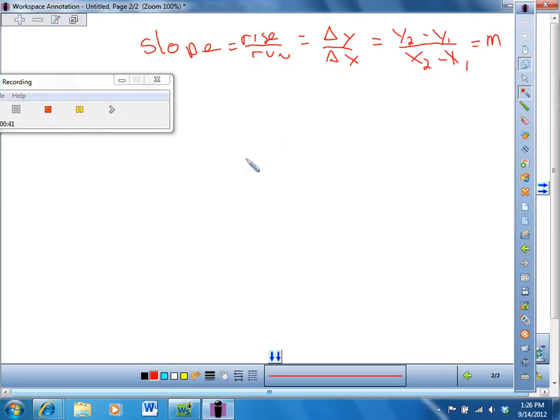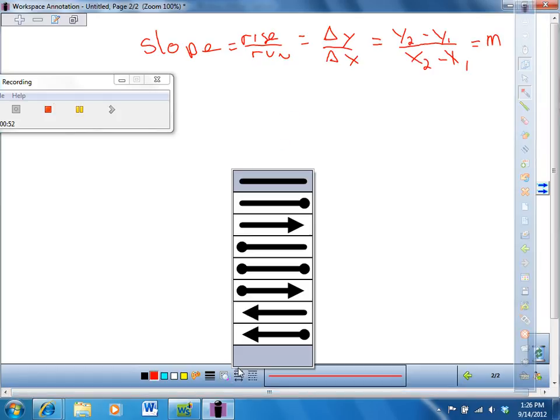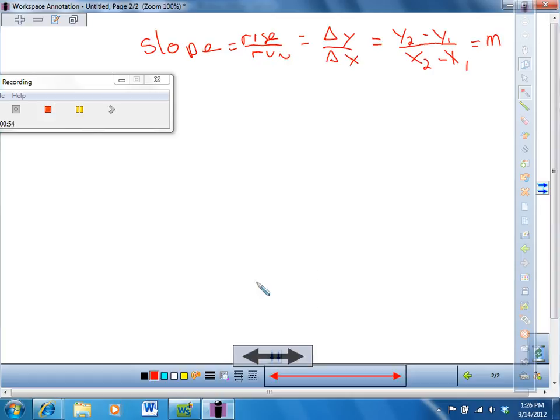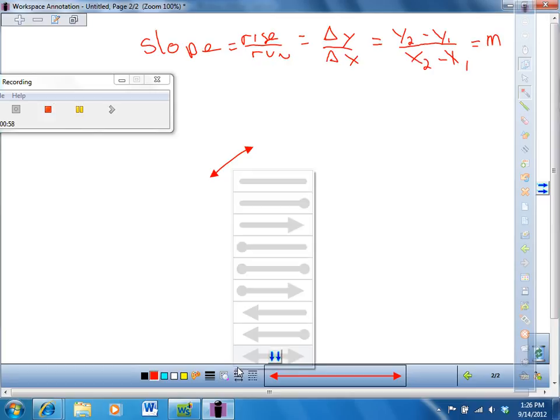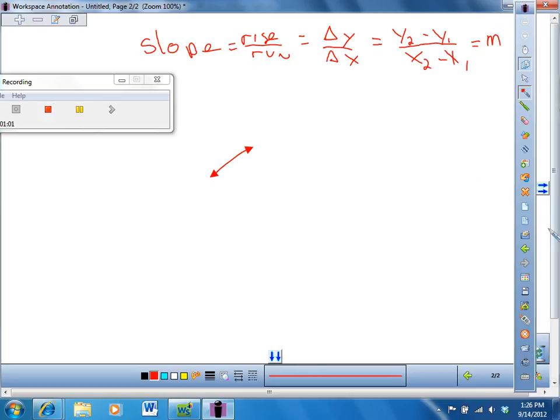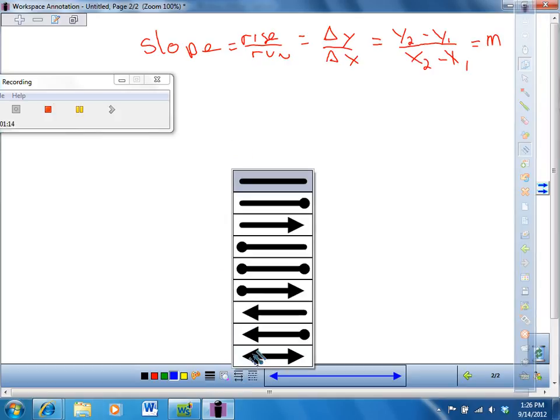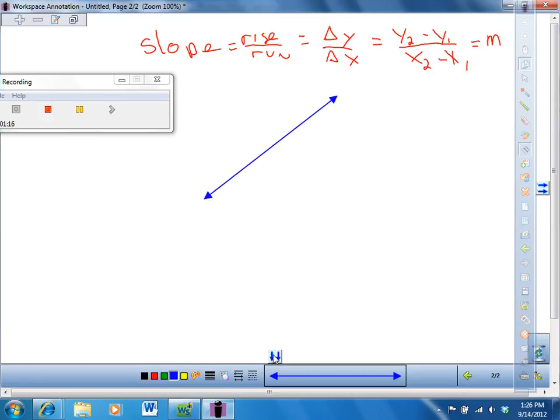So if you have a line that goes like—let's draw some lines with arrows on the line. If you have a line that looks kind of like this, going like that,